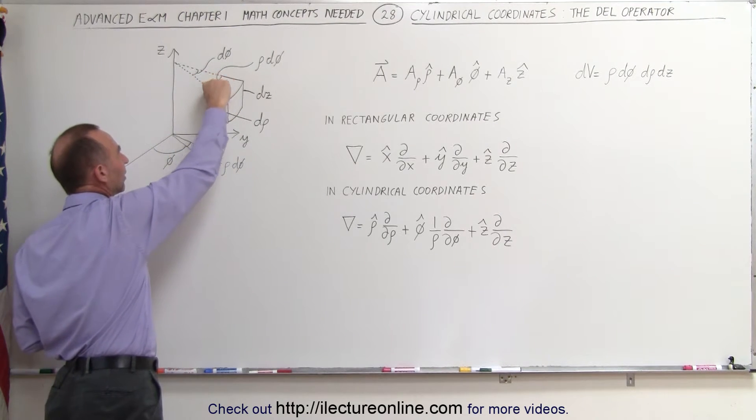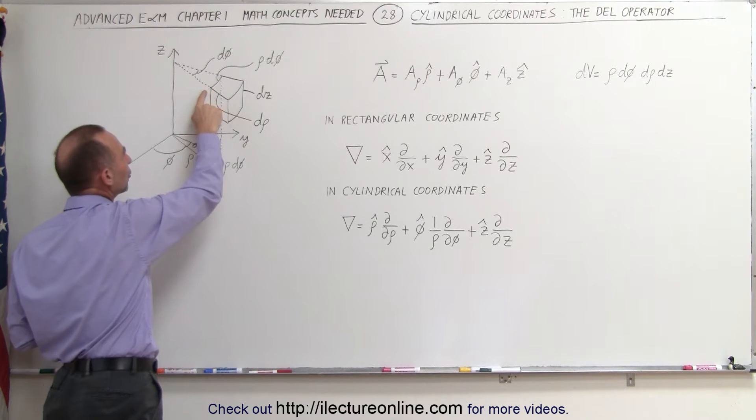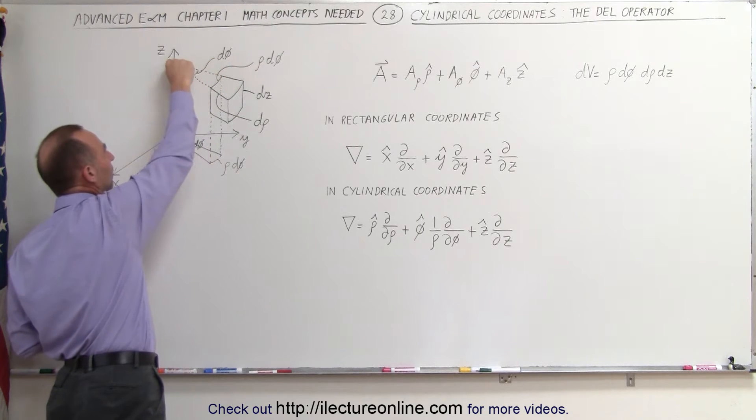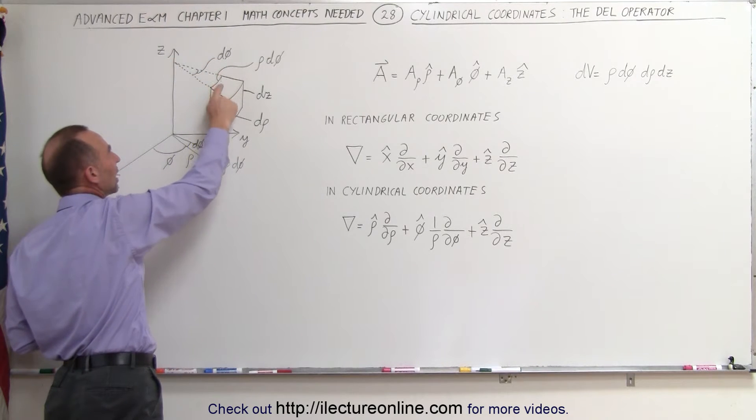The width of that little volume element is going to be rho times d phi because this is along like a circle that goes around the z-axis. So it's going to be the distance to here times the change in the angle, rho d phi.